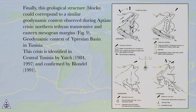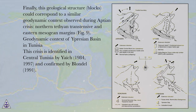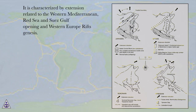Finally, this geological structure — blocks — could correspond to a similar geodynamic context observed during the Apshan Crisis, Northern Tethian Transtensive and Eastern Mesogean Margins, Figure 9: Geodynamic Context of Uprisian Basin in Tunisia. This crisis is identified in Central Tunisia by Yaïk, 1984, 1997, and confirmed by Blondel, 1991. It is characterized by extension related to the Western Mediterranean, Red Sea and Suez Gulf opening, and Western Europe rift genesis.